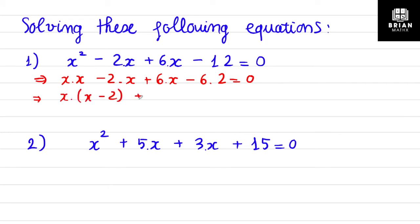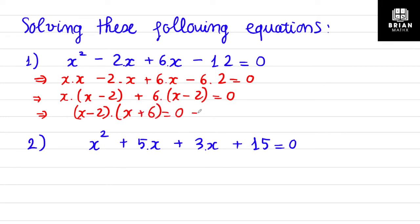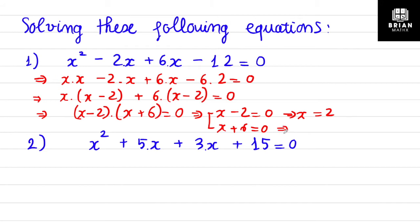The first two terms: x is the common factor, take it outside, and (x - 2) is inside the bracket. The next two terms: you have 6 and (x - 2), so the common factor is (x - 2). Take (x - 2) outside the bracket, leaving (x + 6). So you have two brackets multiplied together equal to zero. Solve by setting each bracket equal to zero.